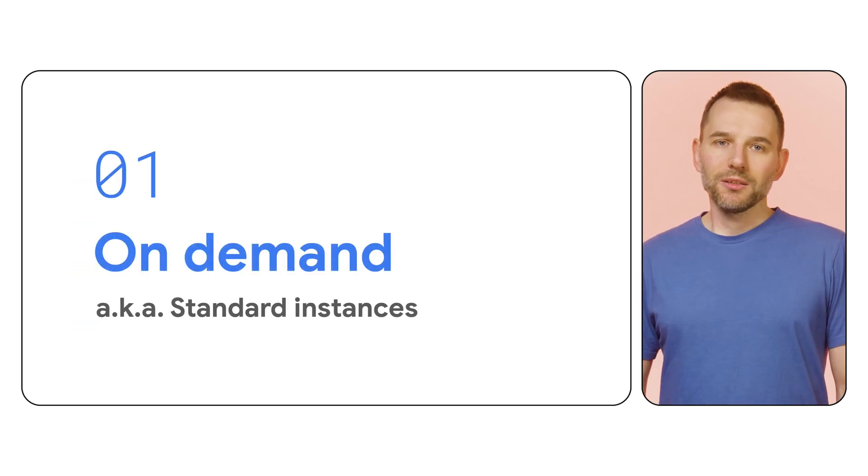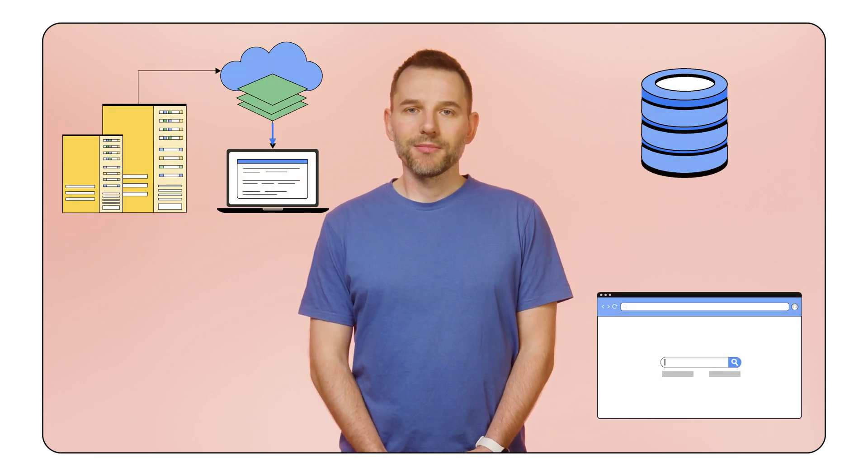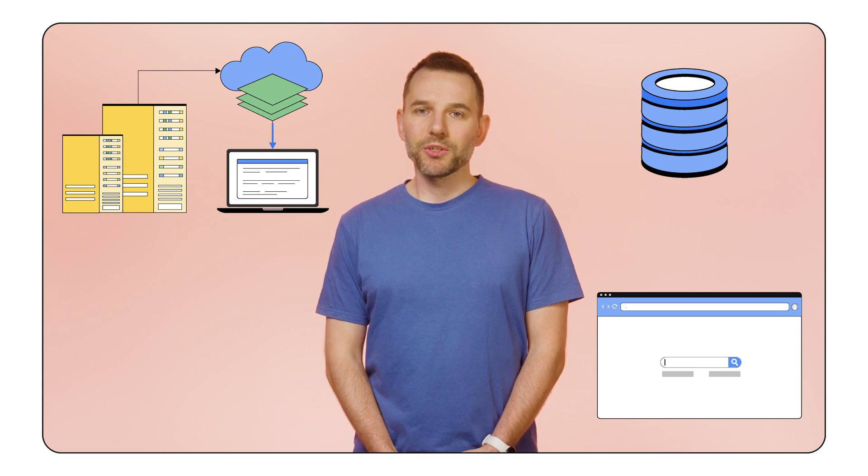The on-demand or standard model is the simplest. Once you acquire a virtual machine, you keep it as long as you need it. This is a great solution for stable workloads, such as hosting a website, database, or an AI model. And thanks to the live migration feature, the virtual machines can be kept running for years.